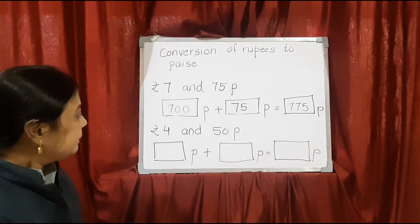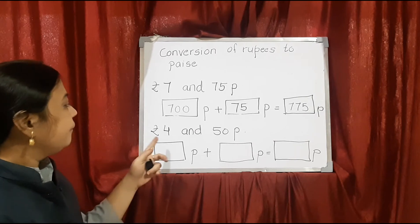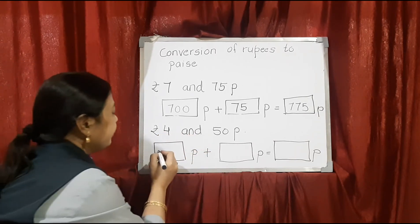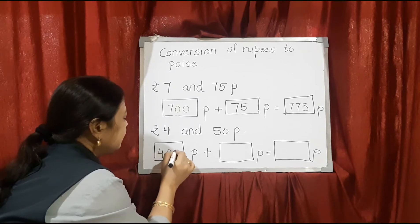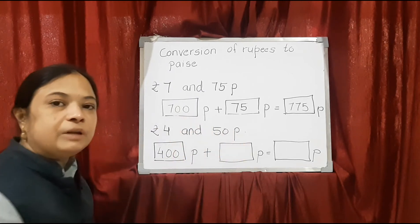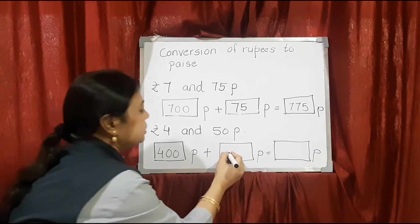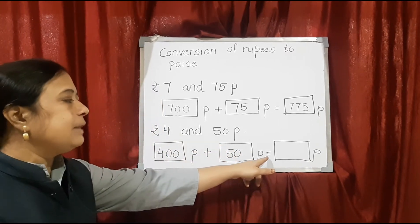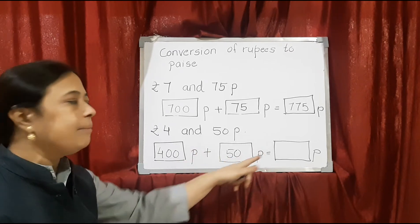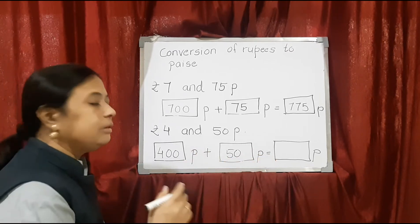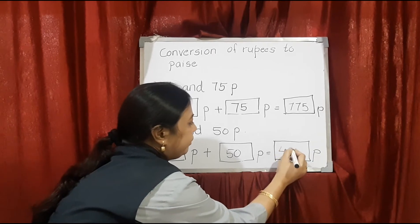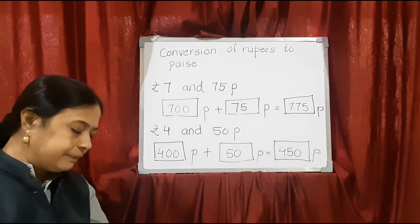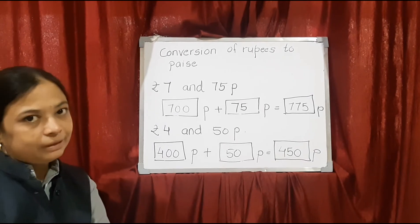Another example given in the exercise is 4 rupees and 50 paise. 4 rupees makes 400 paise. And here also 50 paise is already written, so no need to change — just write down 50. The equal sign means we have to add these numbers and write the final answer, which is 450 paise. This is how you will complete exercise number 3.